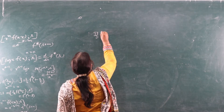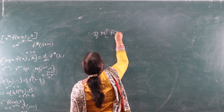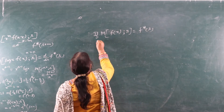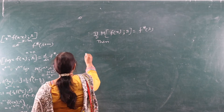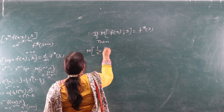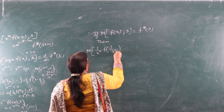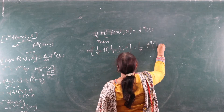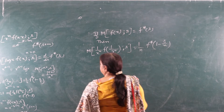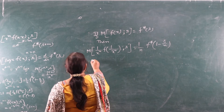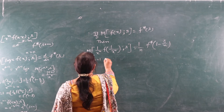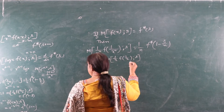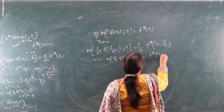If the Mellin transform of f(x) is F*(s), then the Mellin transform of (1/x^n)·f(1/x^n) with respect to s is equal to (1/n)·F*(1−s/n). Particular case: when n=1, the Mellin transform of (1/x)·f(1/x) with respect to s is equal to F*(1−s).